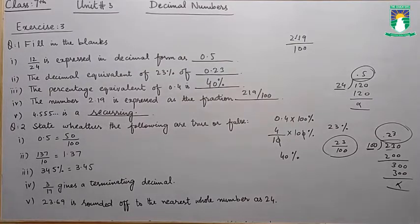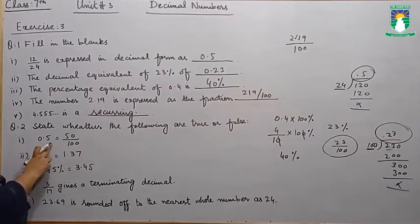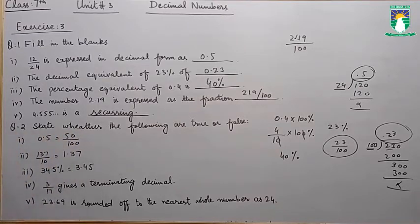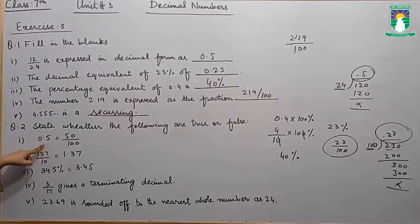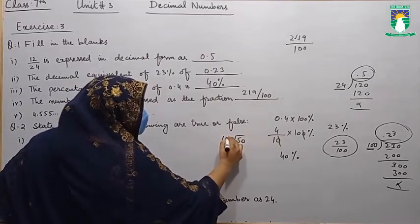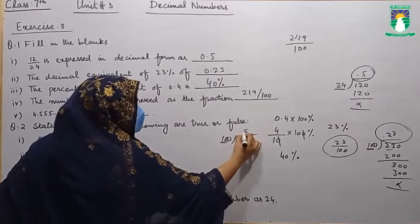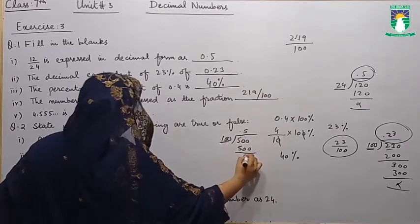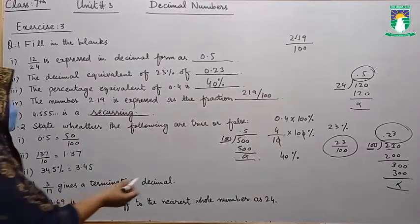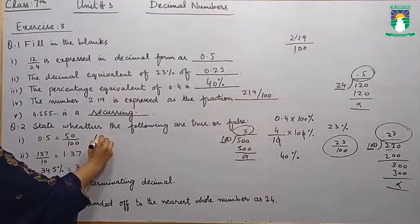Now students, here we have question number 2: state whether the following are true or false. For the first statement, 0.5 is equal to 50 over 100. We check by dividing 50 by 100. Because 100 is greater than 50, we place the decimal and get 10 fives are 500. So the answer is 0.5 — it is a true statement.